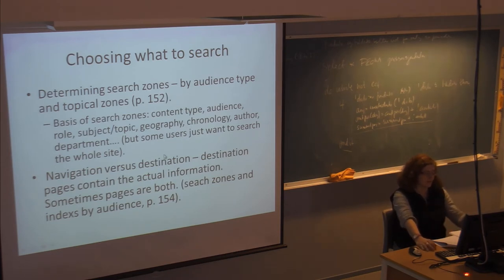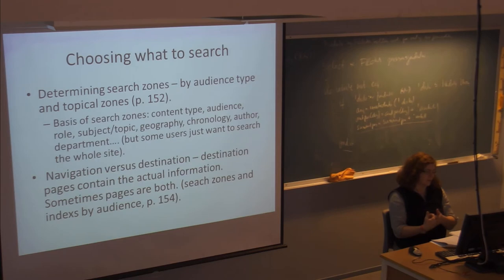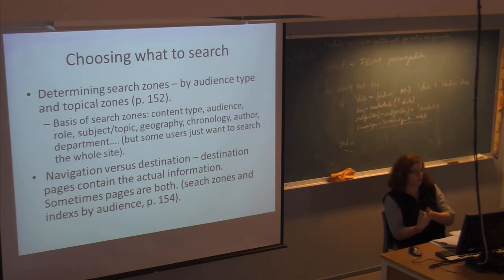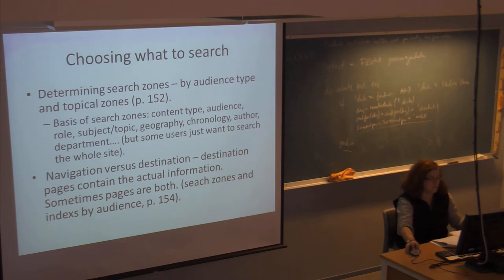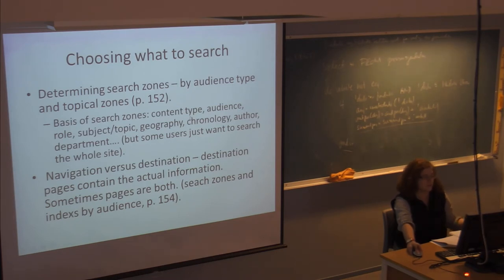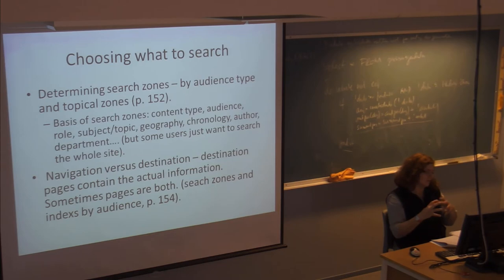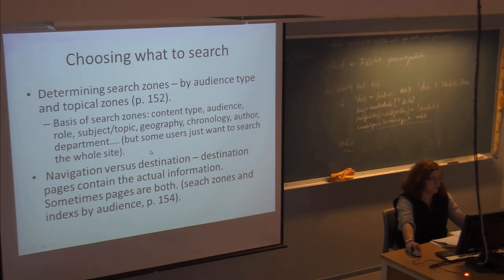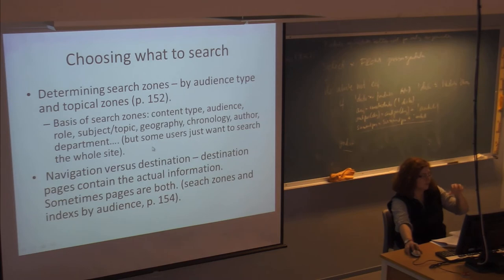What the book especially talks about in this chapter is determining search zones, which is about how you're organizing your site. When we saw the site for recreation equipment, there were different categories for camping and other recreational equipment. You can break your content down into homogeneous content types — by content type, audience, subject topic, geography, chronologically, or author. The New York Times website broke the site down into international news, U.S. news, entertainment, and so forth — broken down by topic type. If you have a search, it might only be effective within that particular area.